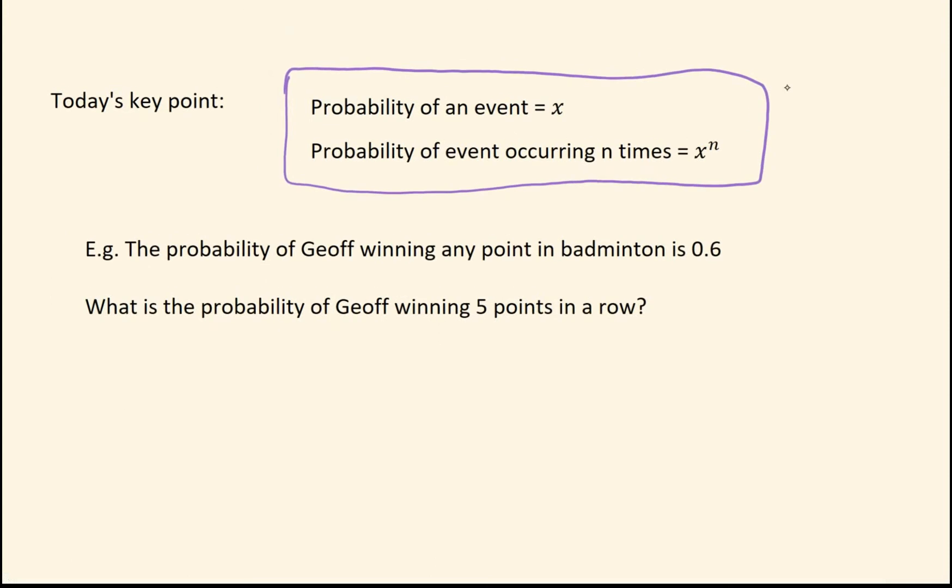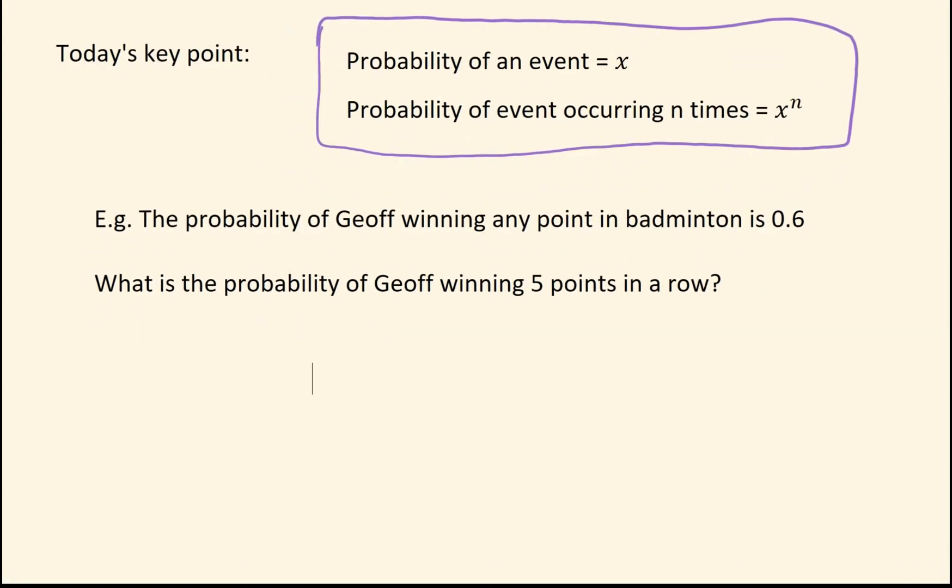Which takes us to the key rule for today. If the odds of an event occurring has probability x, then the odds of an event occurring n times in a row will be x to the n. So if I want Geoff to win five points in a row, that's going to be 0.6 to the power of 5.